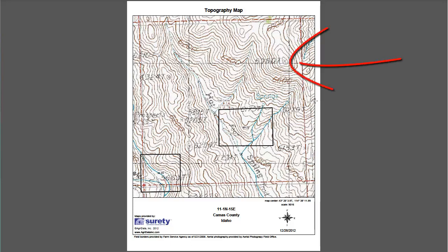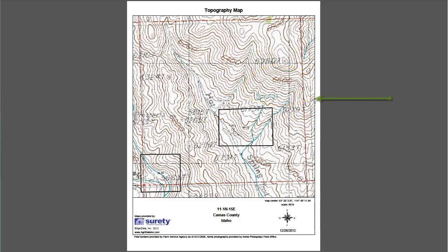Contour lines that are closed are called a loop and they represent the highest point. Some of the contour lines, more commonly referred to as index contours, are thicker lines that will be annotated on every fifth contour line, and they represent the elevation above sea level.